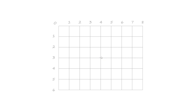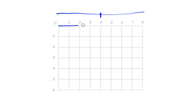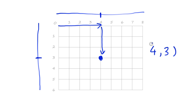Let's look at another example: the very center of the canvas, which is often a good starting point for doing drawings. To find it, we look at the canvas and say: to be in the middle we need to know how big the canvas is. This one goes from zero up to eight, and halfway is four - so we want to go four across. It's six down and halfway is three, so the center is at four comma three.